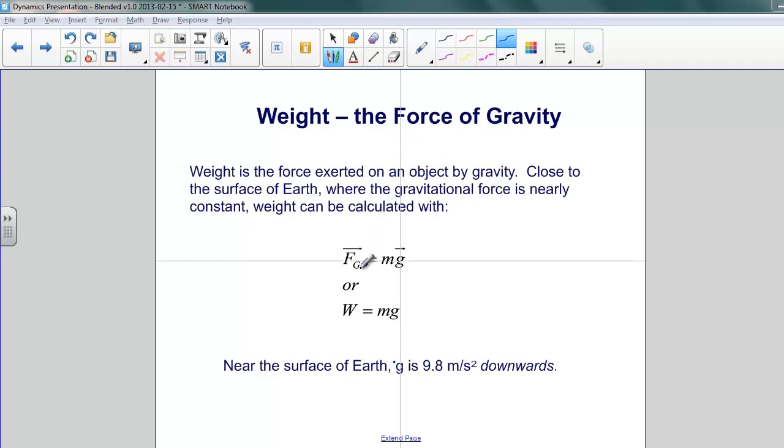F with a subscript g is equal to m times g, the mass times the acceleration due to gravity. Or we can write it as w, which is the weight, is equal to the mass times the acceleration due to gravity. Well, that comes from Newton's second law. F equals ma. And here, a is just equal to g. And near the surface of the Earth, g is 9.8 meters per second squared in a downward direction.